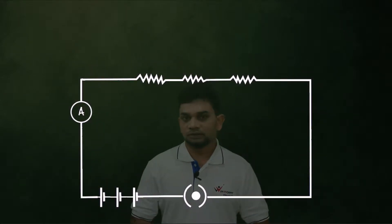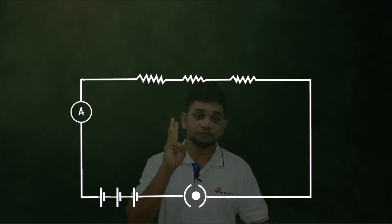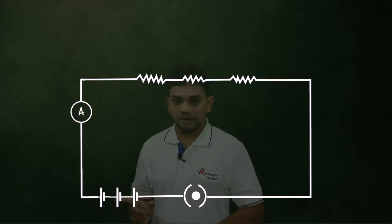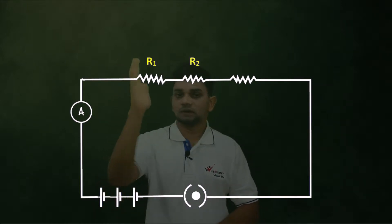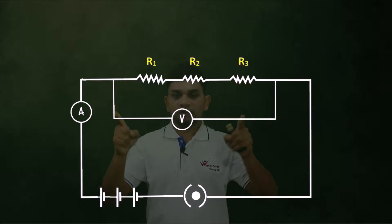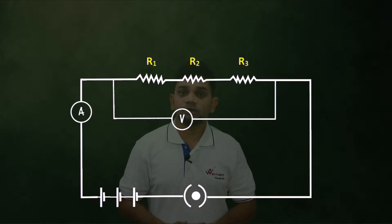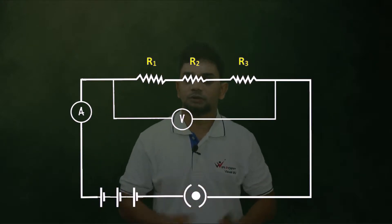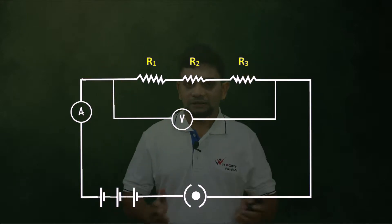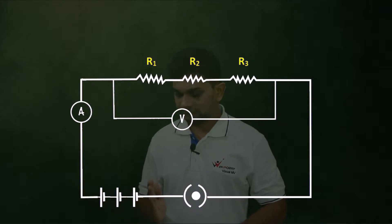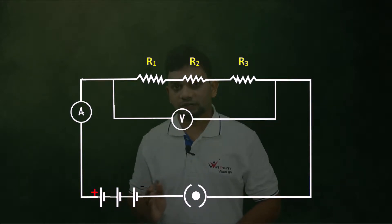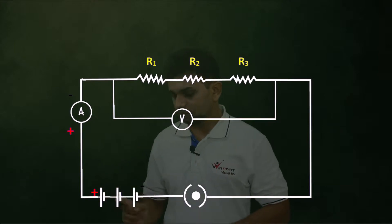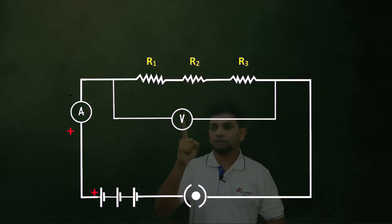Here you can see a circuit consisting of three resistors R1, R2, and R3. There is also an ammeter, which is used to measure electric current in the circuit, a key, and a battery — the battery is a combination of cells. There is also a voltmeter, used to measure potential difference between two ends of a conductor. The positive terminal of the battery is connected to the positive terminal of the ammeter, and the positive terminal of the battery should be connected to the positive terminal of the voltmeter.